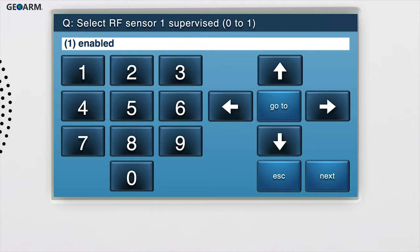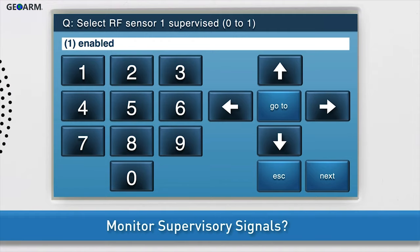Next, decide whether or not you want the panel to monitor supervisory signals of the takeover module, such as low battery, tamper, and more. Select one enabled to activate this feature. Press the down arrow to go to the next sub-question.